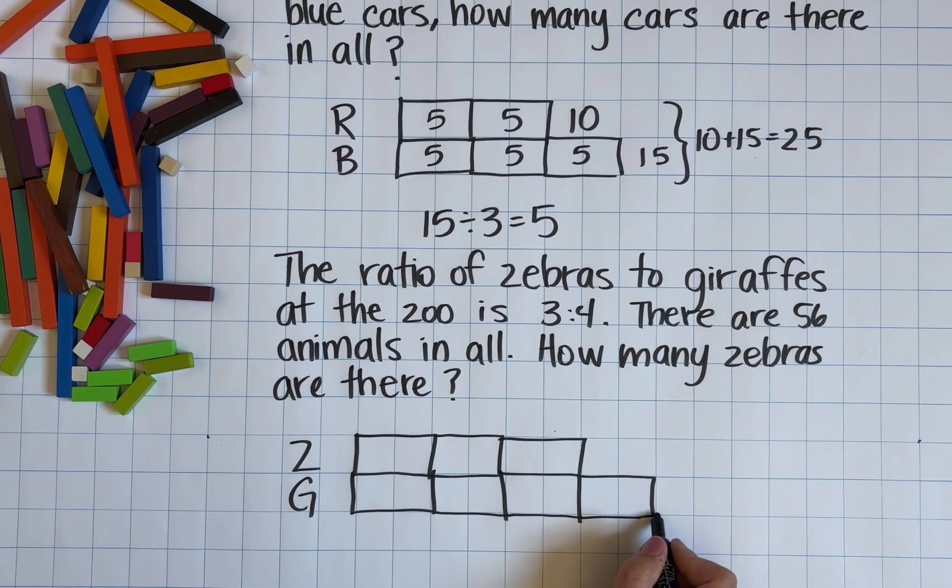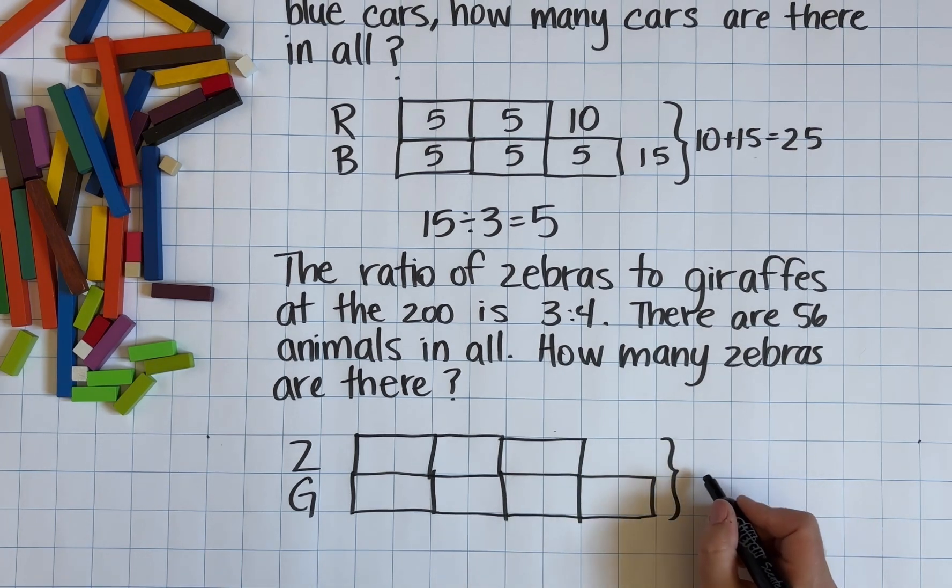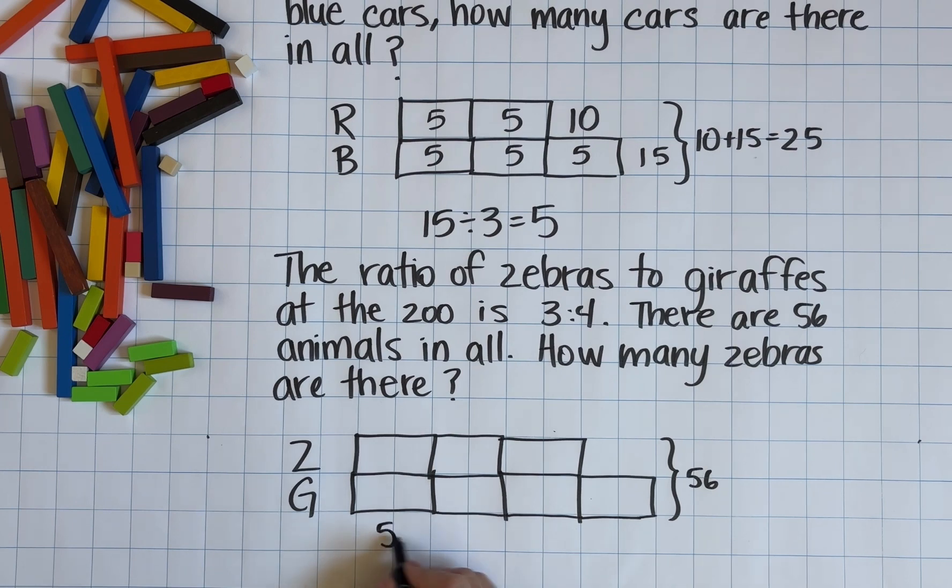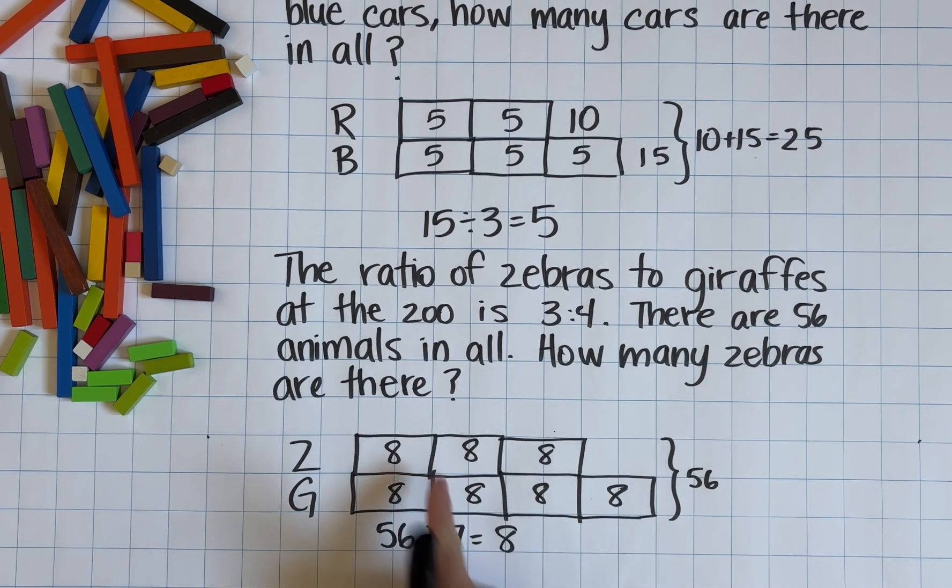So we're going to draw our bar model and we can see that all together there are seven parts and there are 56 animals. So what we can do is simply divide 56 by seven parts and that tells us that there are eight animals in each part. Now it's really simple to see how many of each type of animal there are at the zoo.